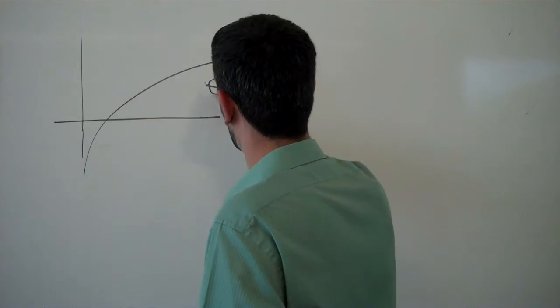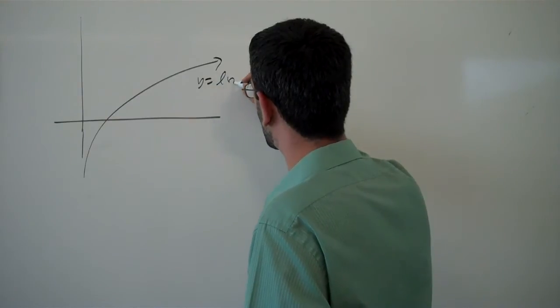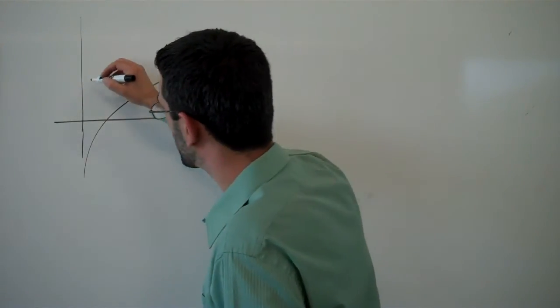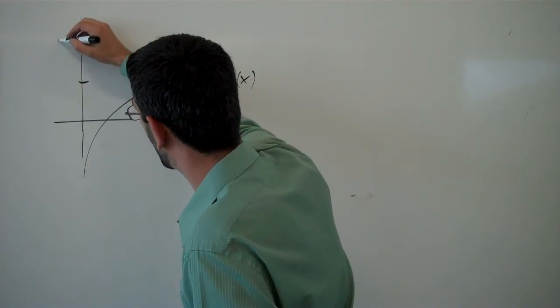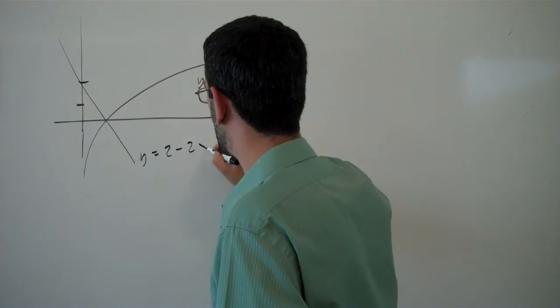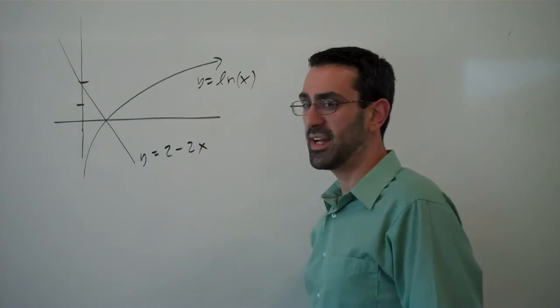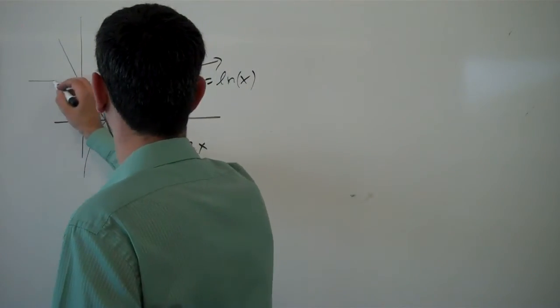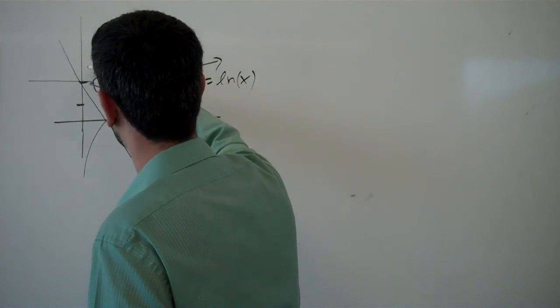First we'll start with y equals ln(x), so the natural log of x. The second curve we'll look at, or line we'll look at, is going to be y equals 2 minus 2x. And then we'll be bounded also by the line y equals 2.